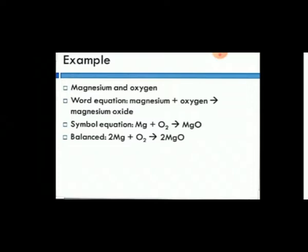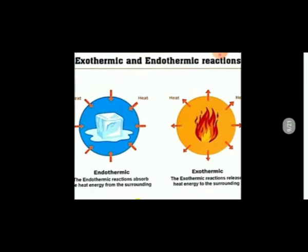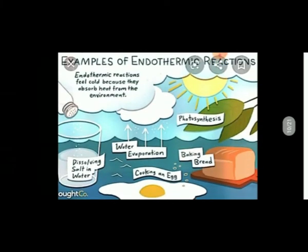There are two types of reactions: exothermic reactions and endothermic reactions. Exothermic reactions are those which release heat energy into the surroundings. Endothermic reactions are those which absorb heat energy from the surroundings. For example, ice melts because of absorbing heat energy from the surroundings, and when fire burns, it produces heat towards its surroundings.